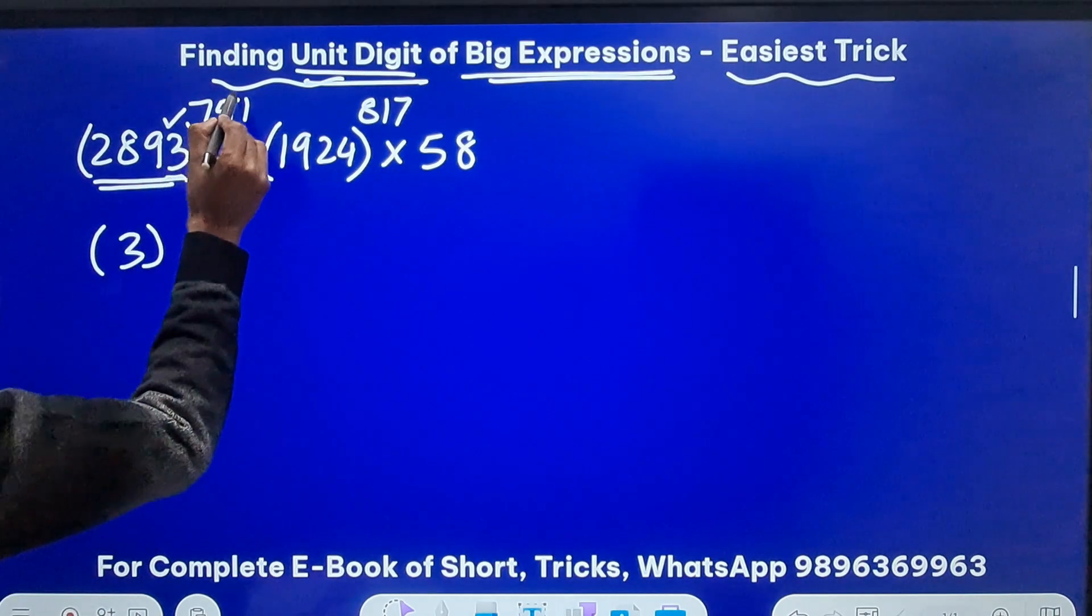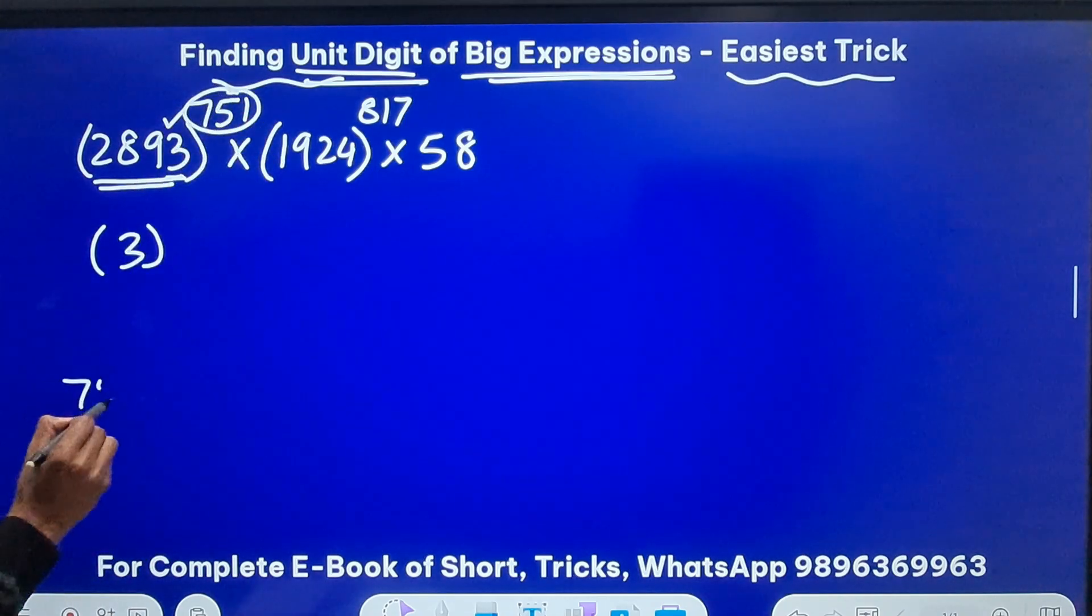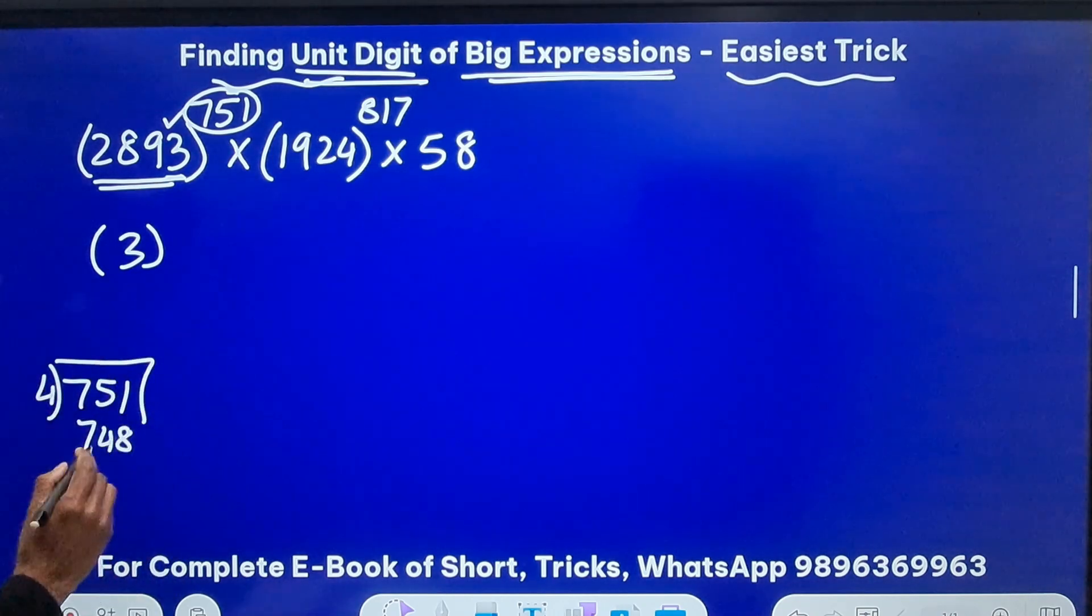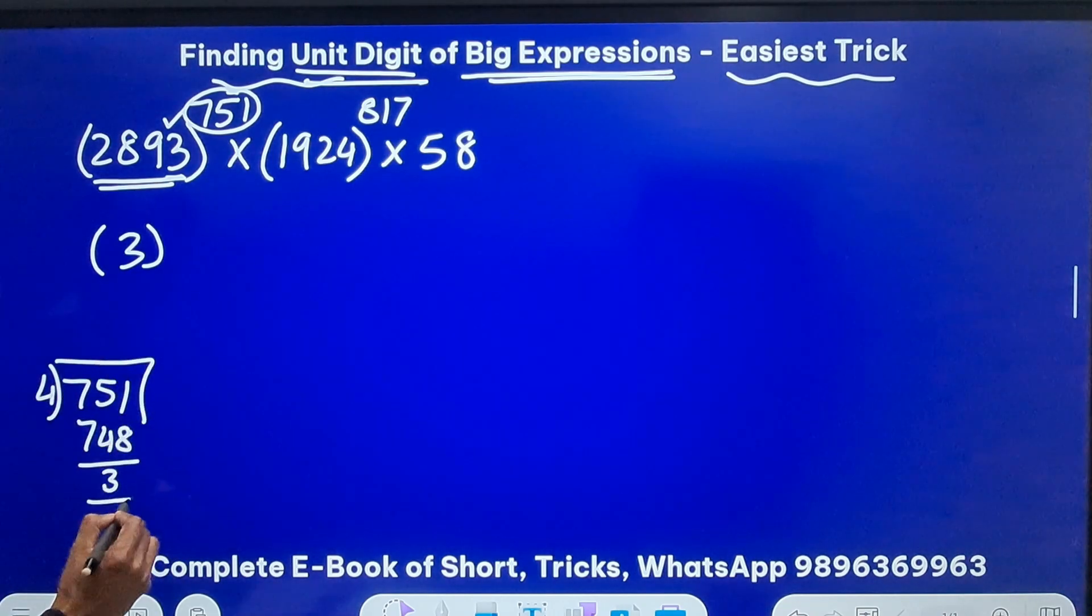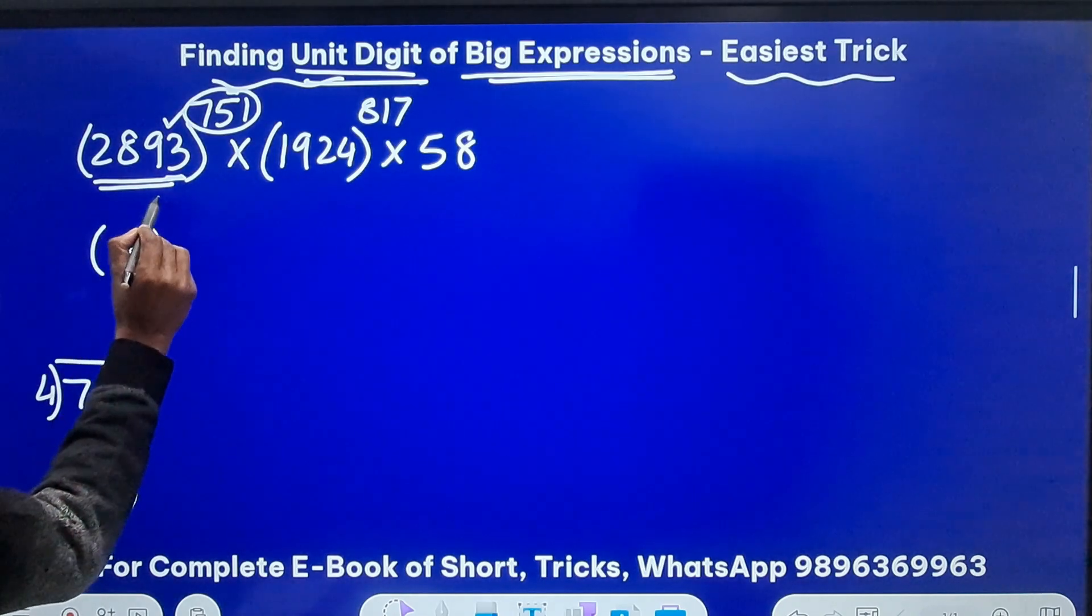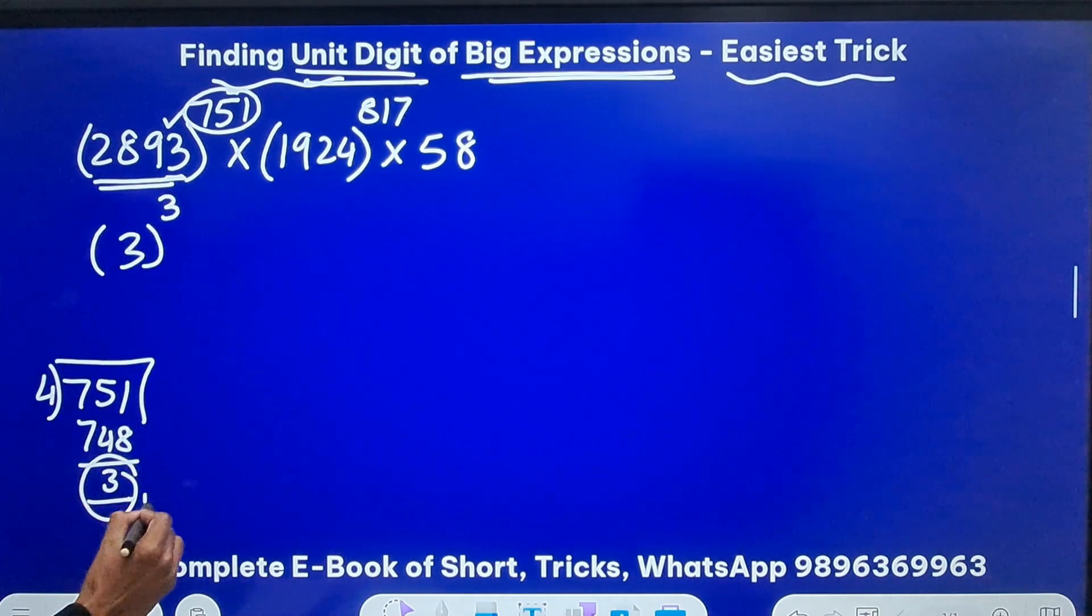Then the exponent 751 will be divided by 4 and 4 is a default number. So when you divide 751 by 4, 748 is divisible by 4 right, so the remainder is going to be 3. I am concerned about this remainder and I will only write the power as this remainder.